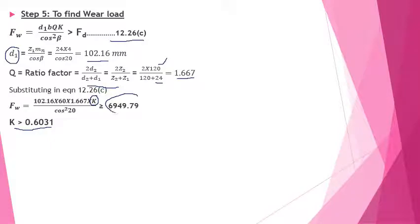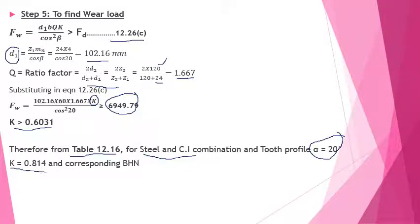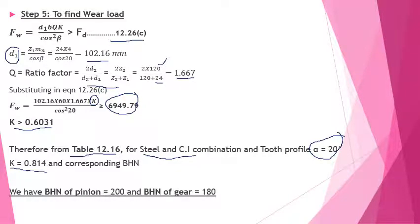Referring to table 12.16 for the combination of steel and cast iron with a 20 degree tooth profile, the tabulated value of K = 0.814. Since the required K (0.6031) is less than the tabulated value (0.814), the design is satisfactory. From the same table, BHN for the pinion = 200 and BHN for the gear = 180. This completes the solution to problem 1.